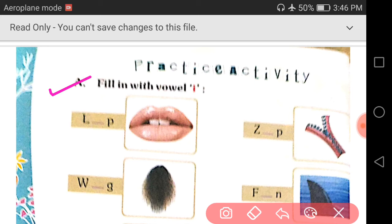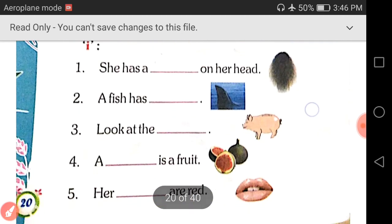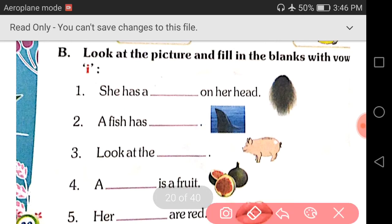Now move to the second one, Part B. Read out the heading: Look at the picture and fill in the blanks with vowel I. Here are some pictures. We have to fill the blank to complete the sentence.